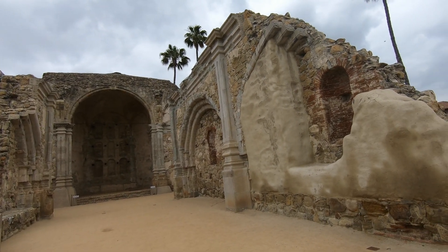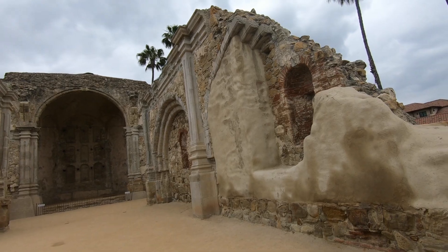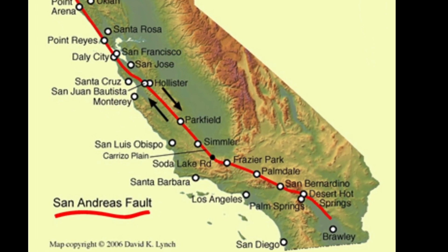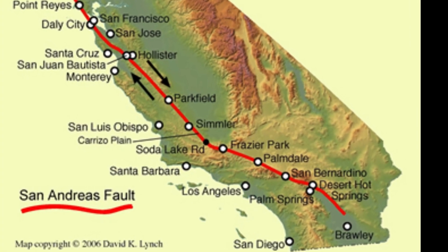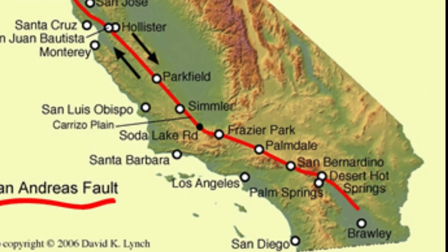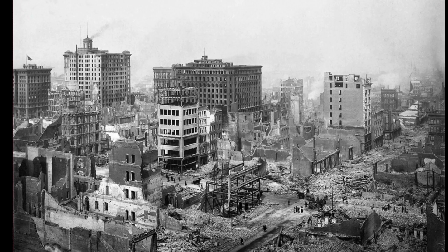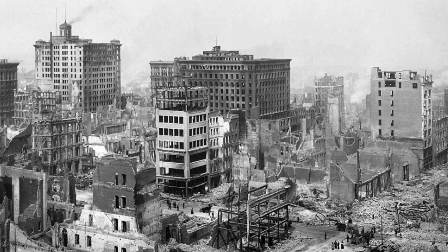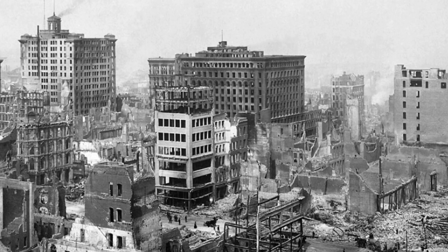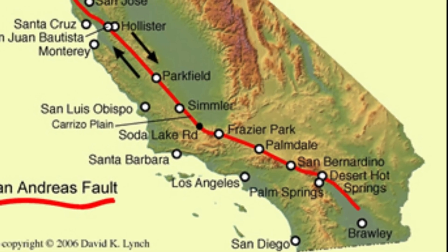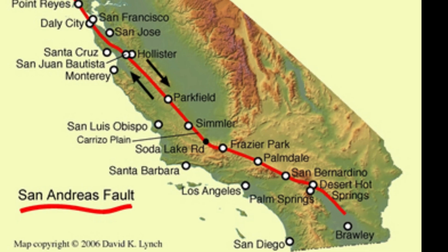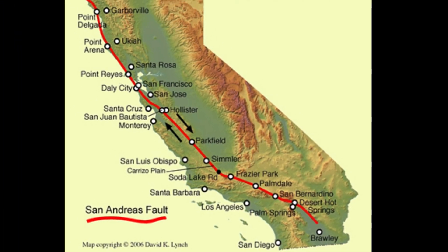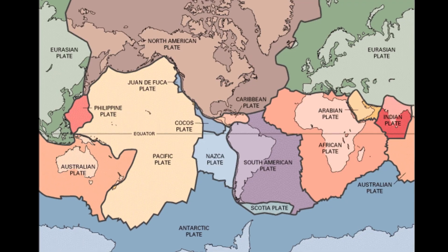I'm going to start this video by talking about the geology first and the environment that set up the ability for there to be such a large earthquake. A 7.5 magnitude earthquake is huge — it's something that would be life-changing if something like that struck in the LA area today. Earthquakes in Southern California are related to the San Andreas Fault Zone, which is a continental fault.